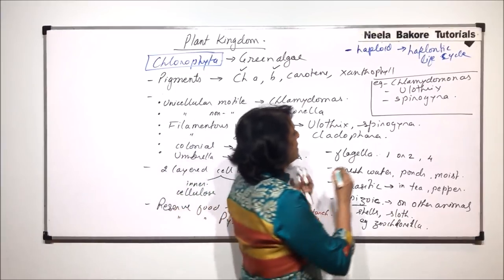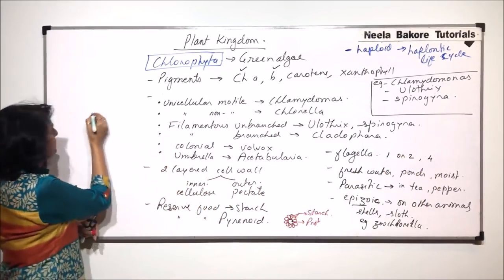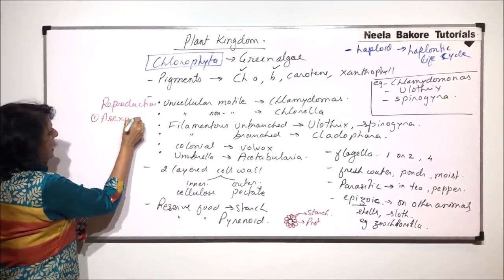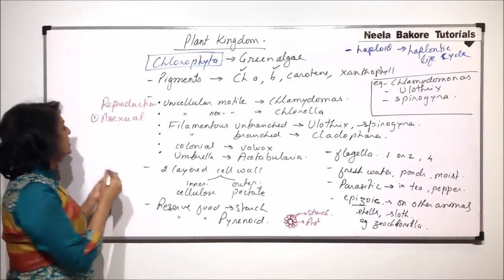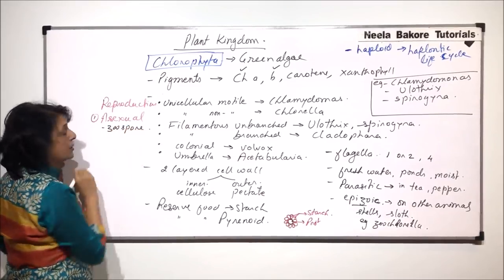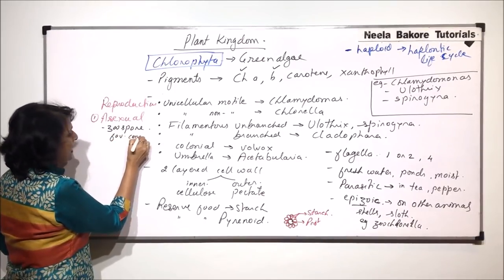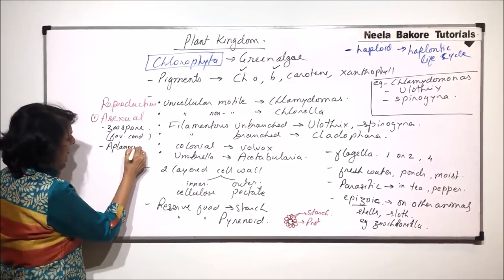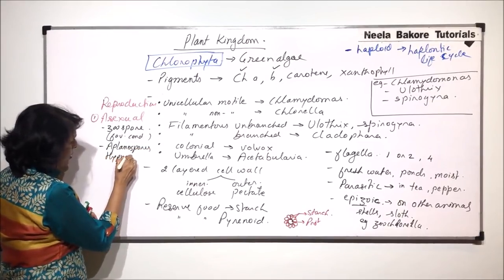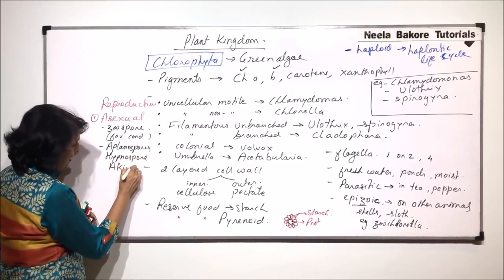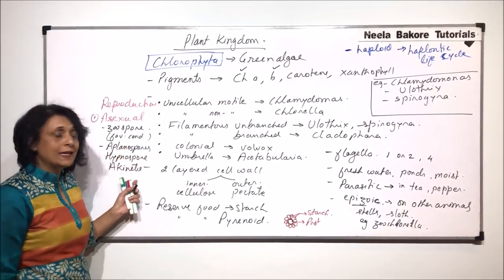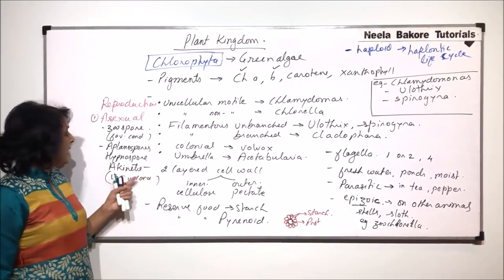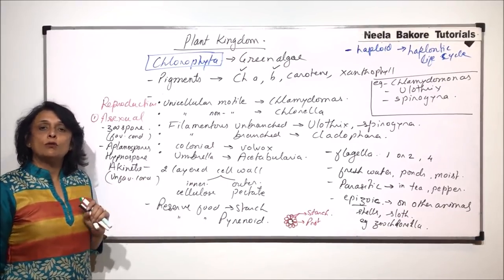Asexual reproduction takes place by zoospore formation, and zoospores are formed in favourable conditions. There are other spores formed called aplanospores, as well as hypnospores and akinetes. These akinetes, hypnospores, and aplanospores are produced in unfavourable conditions and help in reproduction as well as to withstand adverse conditions.